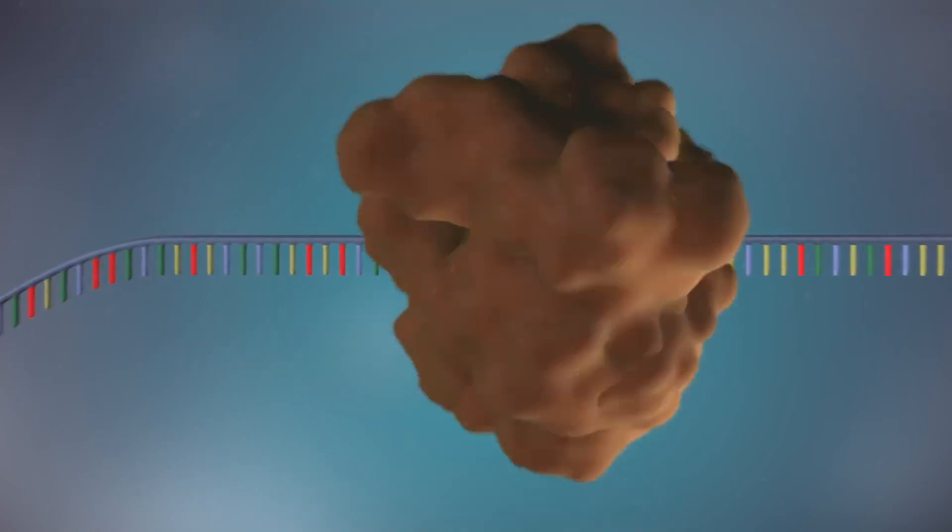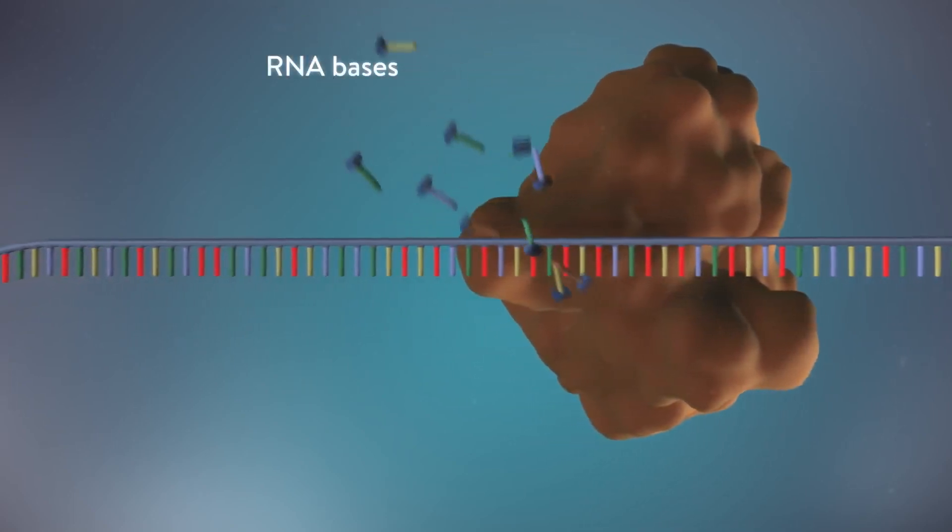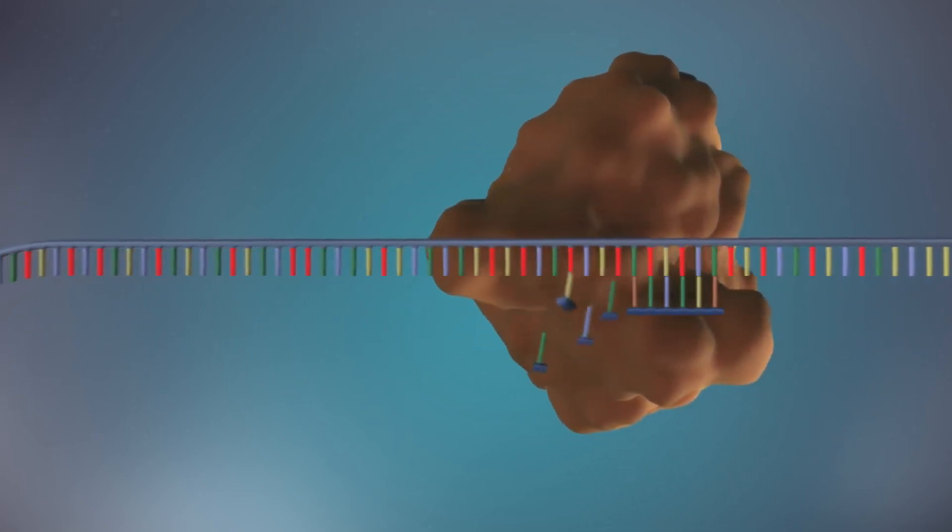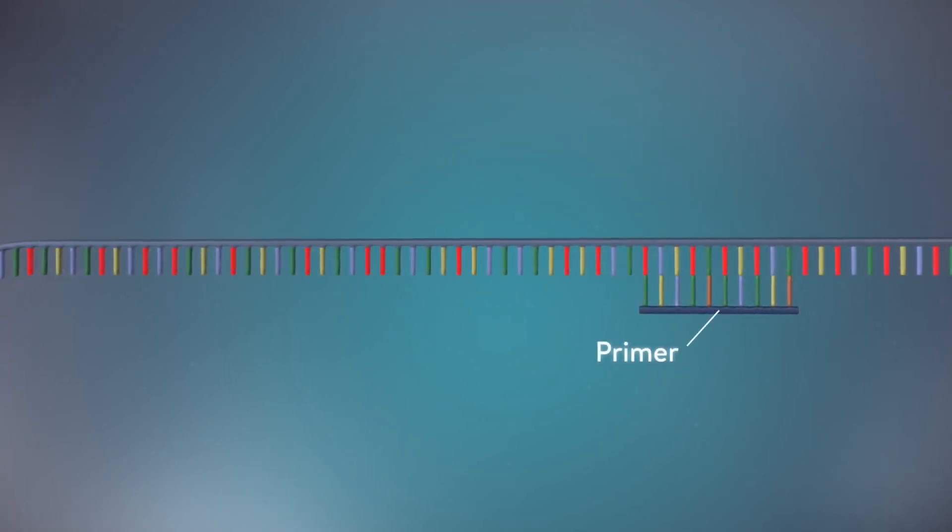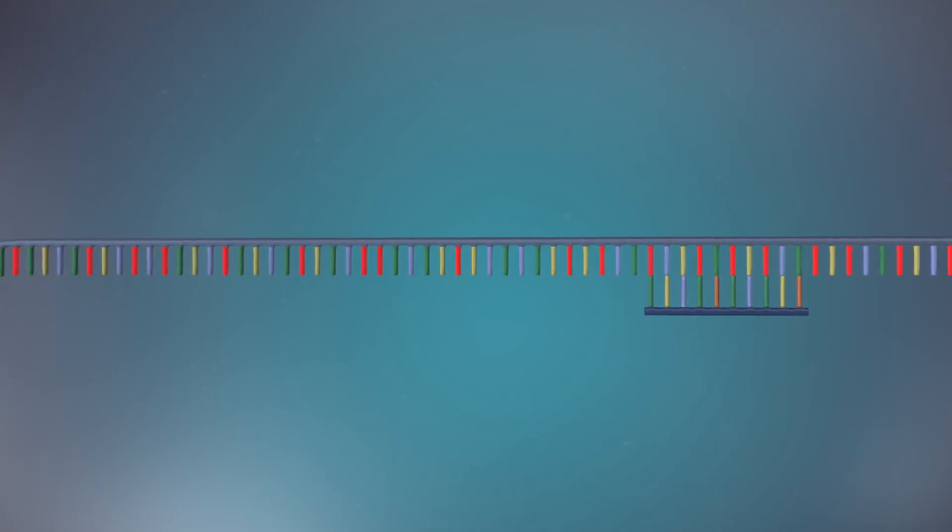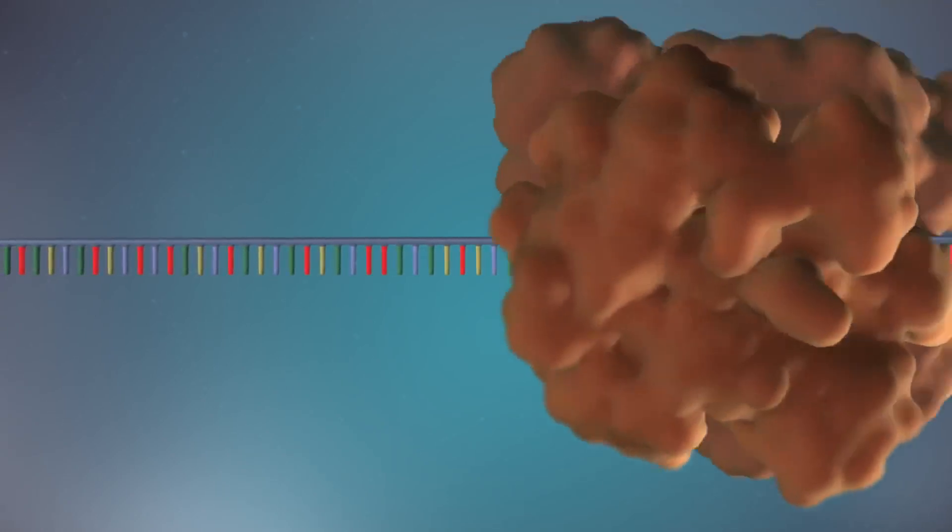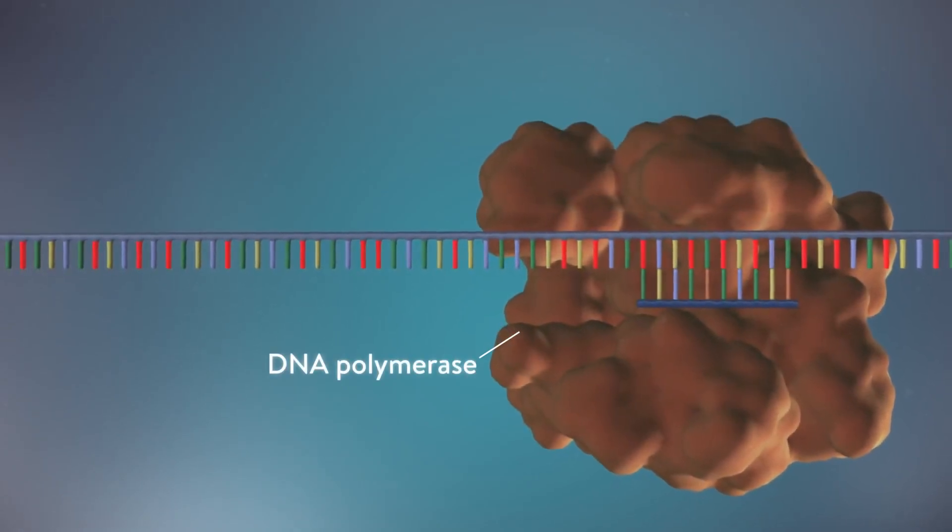An enzyme called primase starts the process. This enzyme makes a small piece of RNA called a primer. This marks the starting point for the construction of the new strand of DNA. An enzyme called DNA polymerase binds to the primer and will make the new strand of DNA.